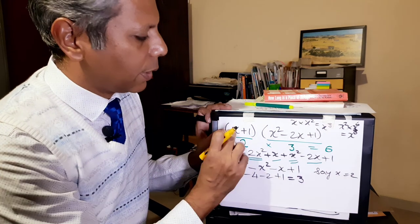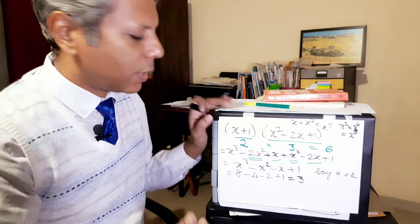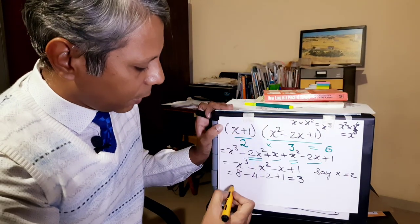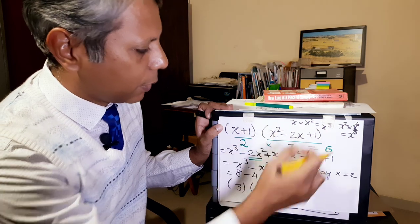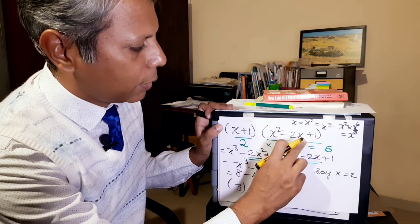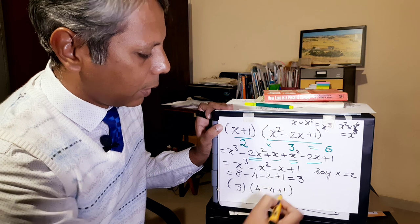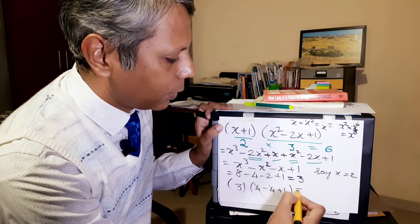If we substitute x directly over here in these and multiply them, we should get the same answer. So if you put x equal to 2 here, that will be 3. And if you put x equal to 2 here, that will be 4 minus 2 into 2, 4 plus 1, so they cancel out and this is 1. 1 into 3 is also 3.